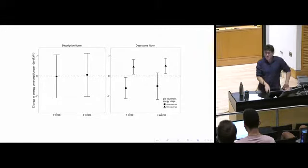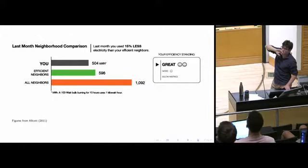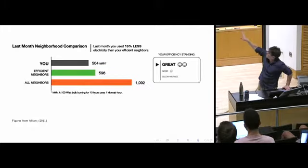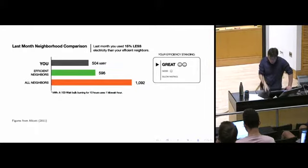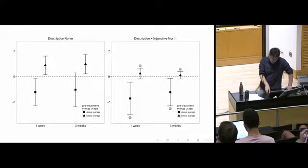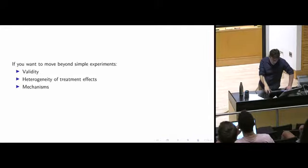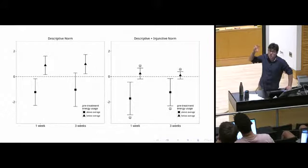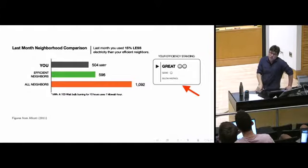But people using less than average actually increased their consumption — as if they thought 'I'm using less electricity, I should use more.' The researchers anticipated this and created a condition adding a smiley face. The information they called a descriptive norm, and the smiley face a prescriptive norm, teaching people what the right thing to do is. Adding the smiley face eliminated much of this boomerang effect, turning an experiment that seemed to have no effect into something with the desired effect.